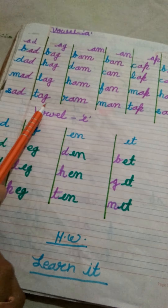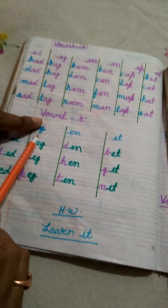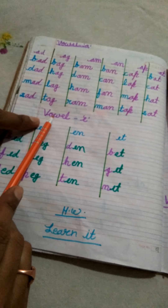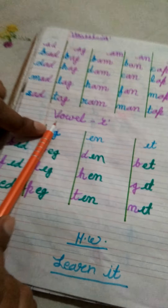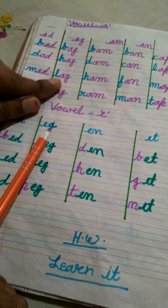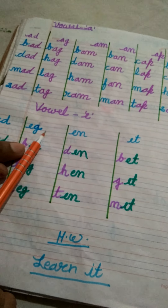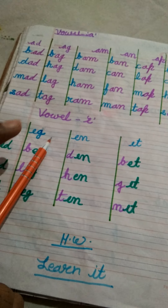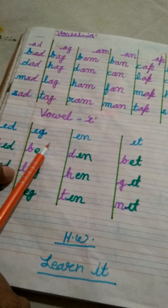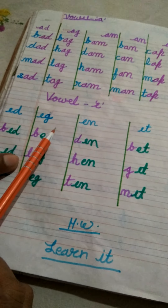AM family: B + Am = Bam, D + Am = Dam, H + Am = Ham, R + Am = Ram. Next — AN family: B + An = Ban, K + An = Can, F + An = Fan, M + An = Man.